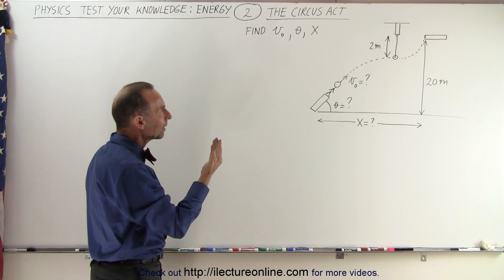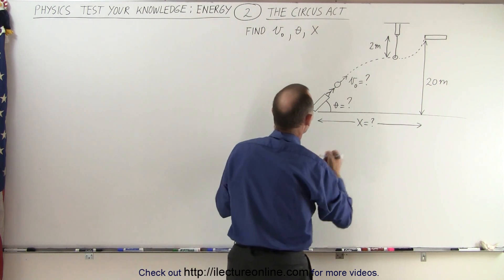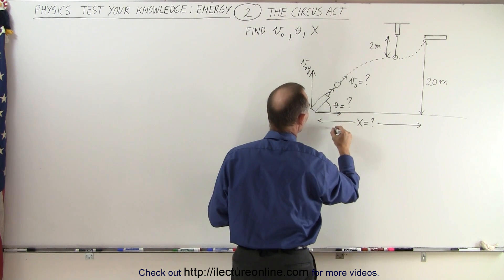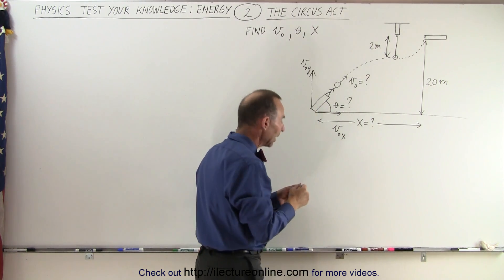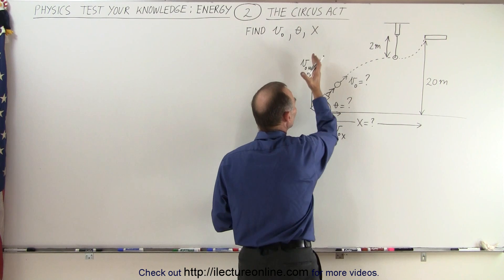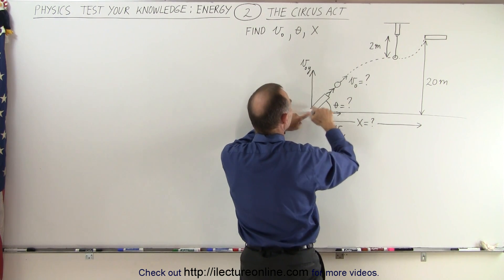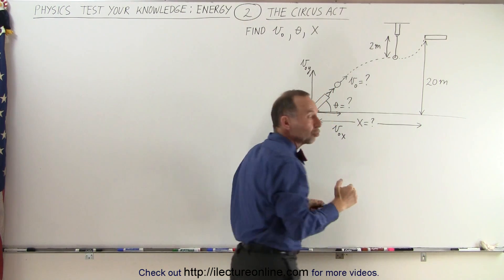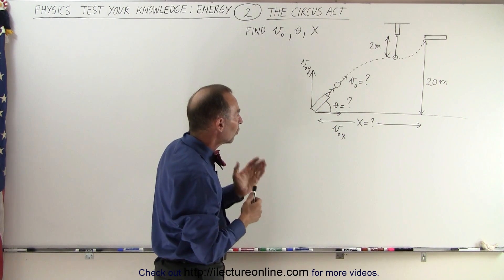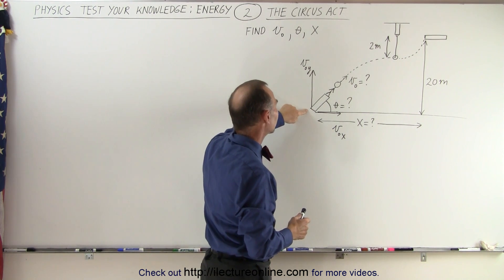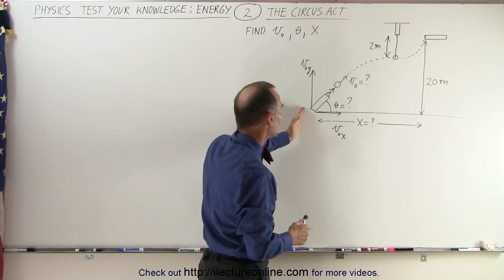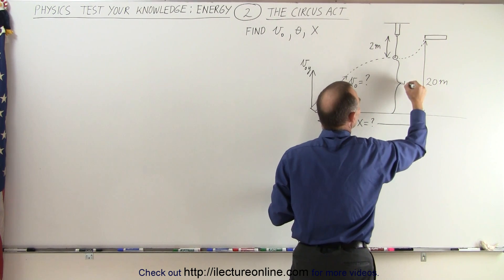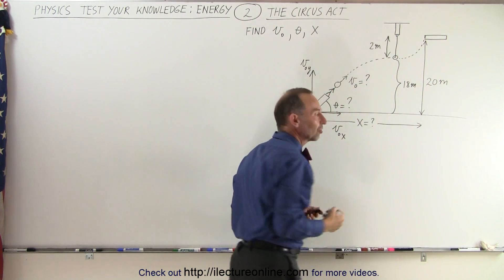How do we do that? Think about it in terms of energy. The person will have a velocity in the y direction — v initial in the y direction — and an initial velocity in the x direction. When the person reaches the ring, the energy in the y direction will be completely converted from kinetic energy to potential energy, because the motion at that point will only be in the horizontal direction. The kinetic energy in the y direction is converted to potential energy — that height would be 18 meters.